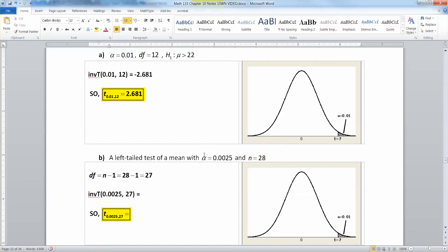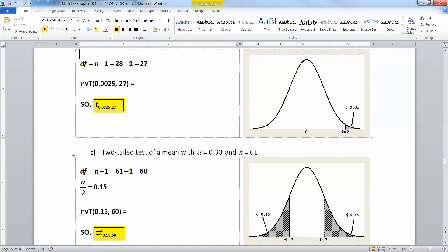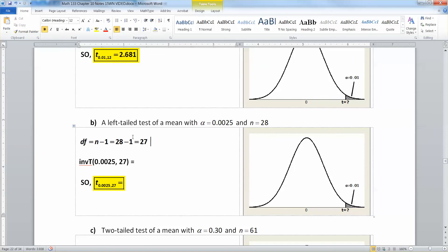All right, now what about a left tailed test of a mean with alpha equal to 0.0025, and n equals 28? Well, we have to start off by finding the degrees of freedom. So degrees of freedom is n minus 1, which is 28 minus 1, which would be 27 in this case. So 27, there's your degrees of freedom.